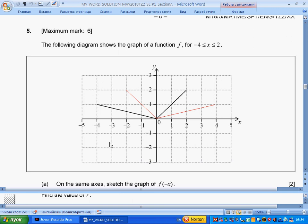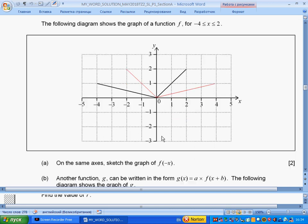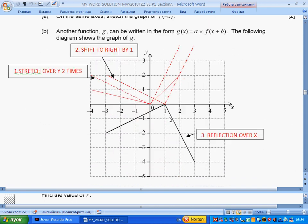We have a graph of function f from -4 to 2. The graph consists of two parts: for negative x we have one straight line, for positive x we have another straight line. On the same axis, sketch the graph of f(-x). When x is positive, the result will be the same as for negative x, which means we should reflect our graph over the y-axis.